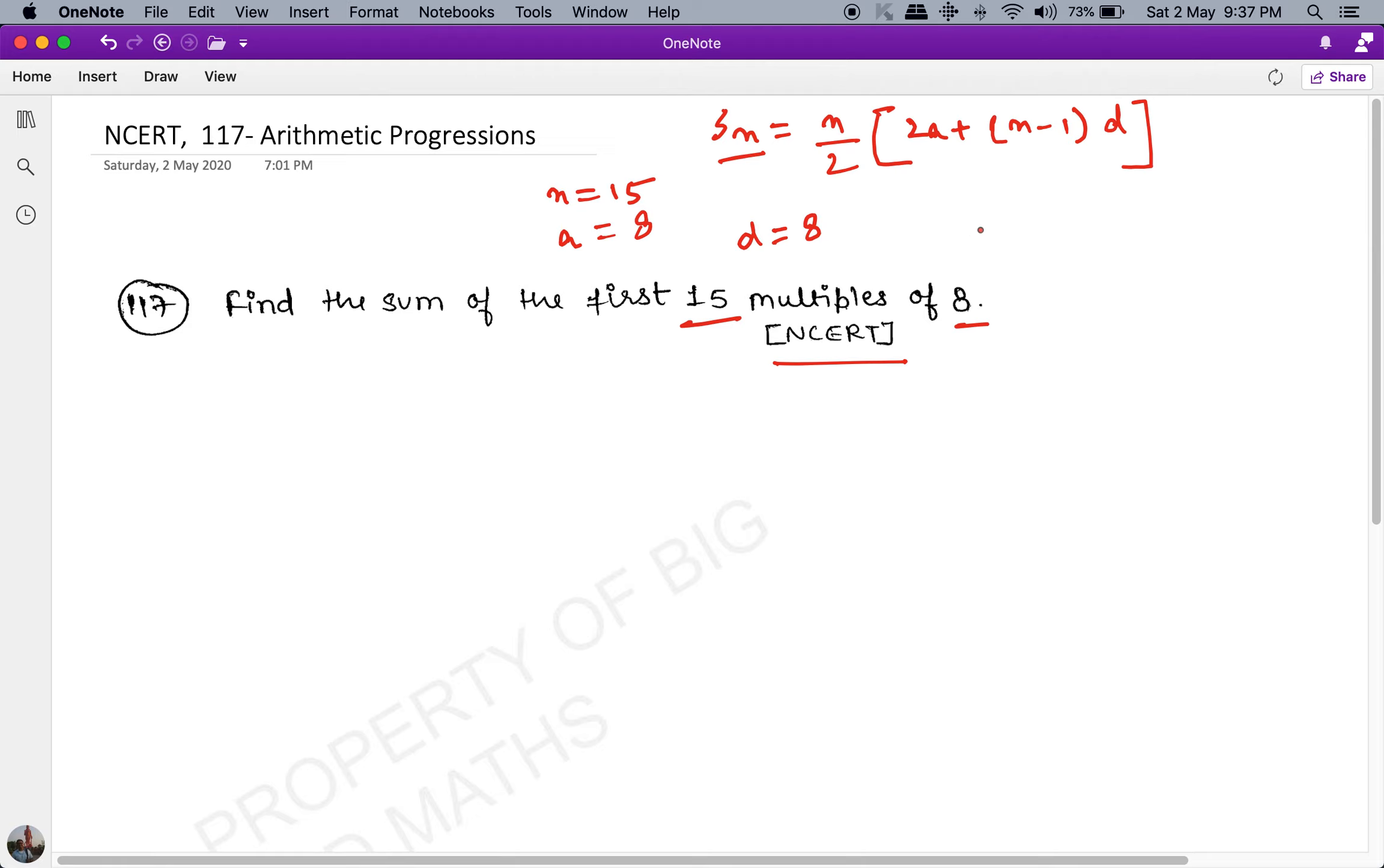Okay, so 8×2 minus 8×1, you will get the difference as 8, and that's what we're going to work upon. So we have a, we have n, we have d. All we have to do is just plug the value in the formula.